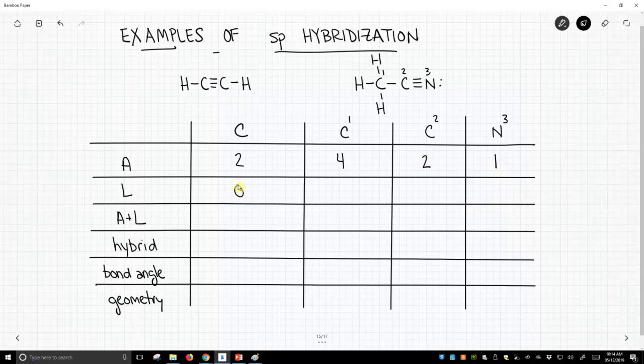The number of lone pairs: molecule on the left, both carbons have no lone pairs. No lone pairs on carbon 1, no lone pairs on carbon 2. Nitrogen 3 has one lone pair.